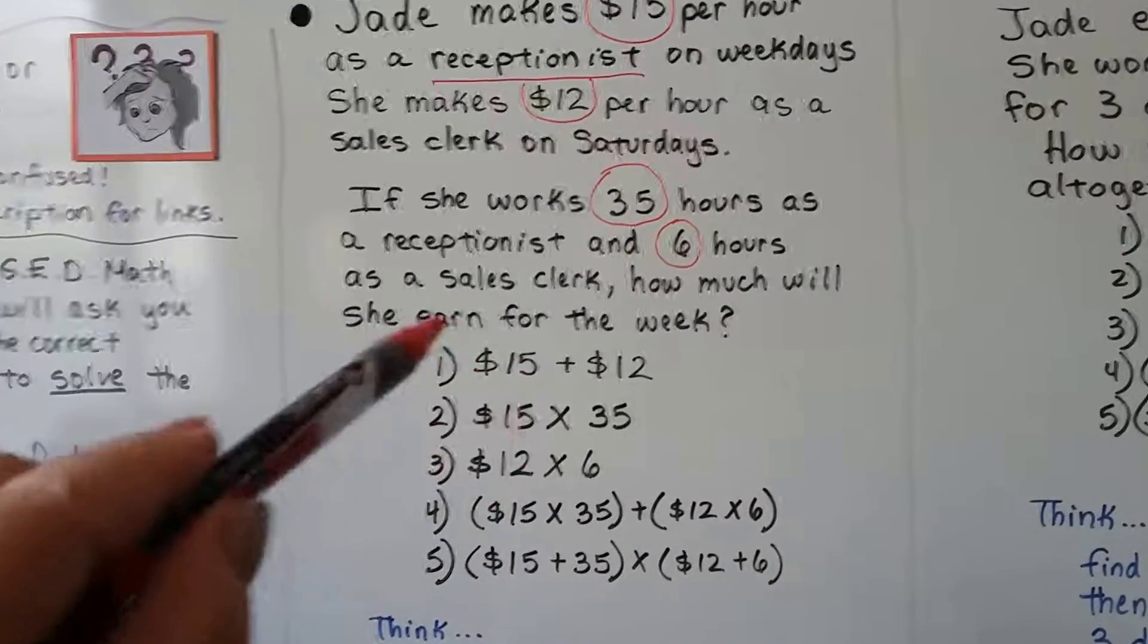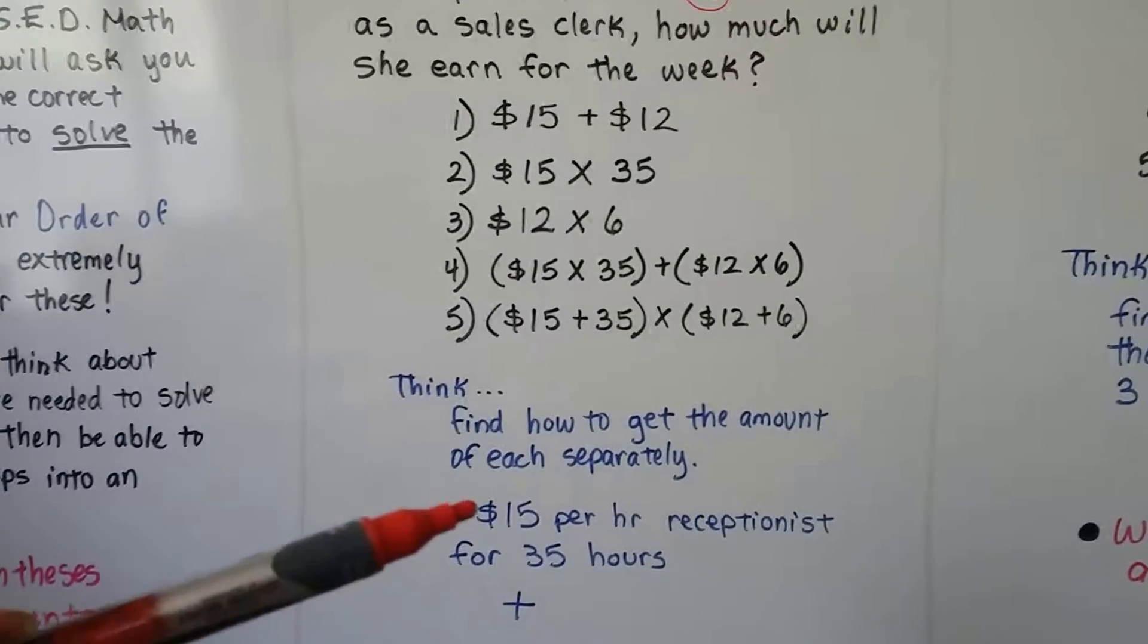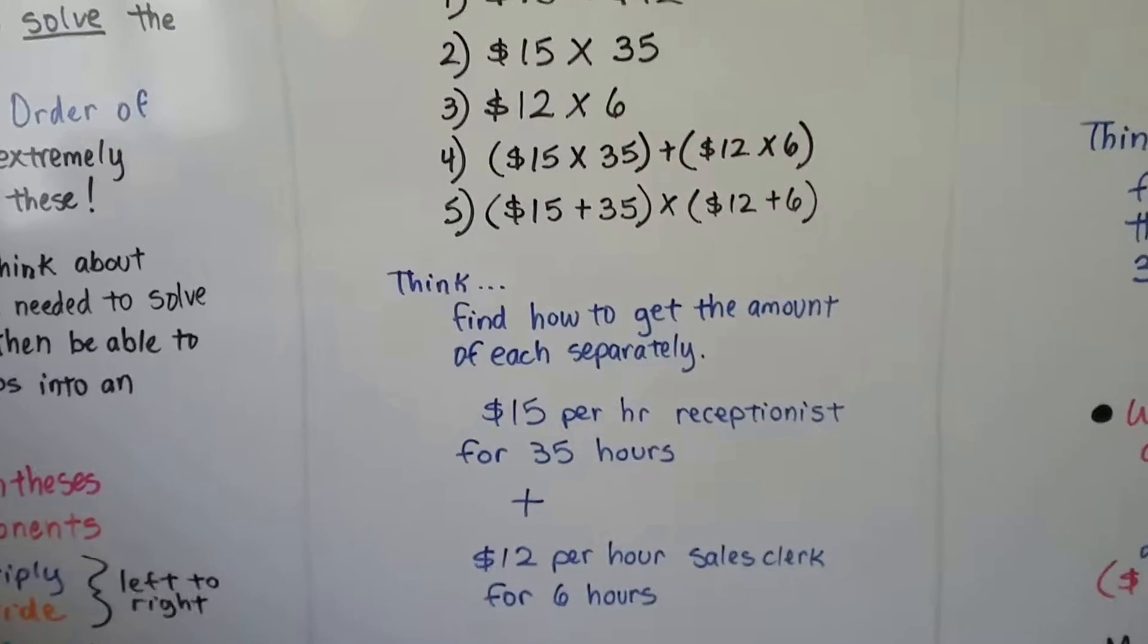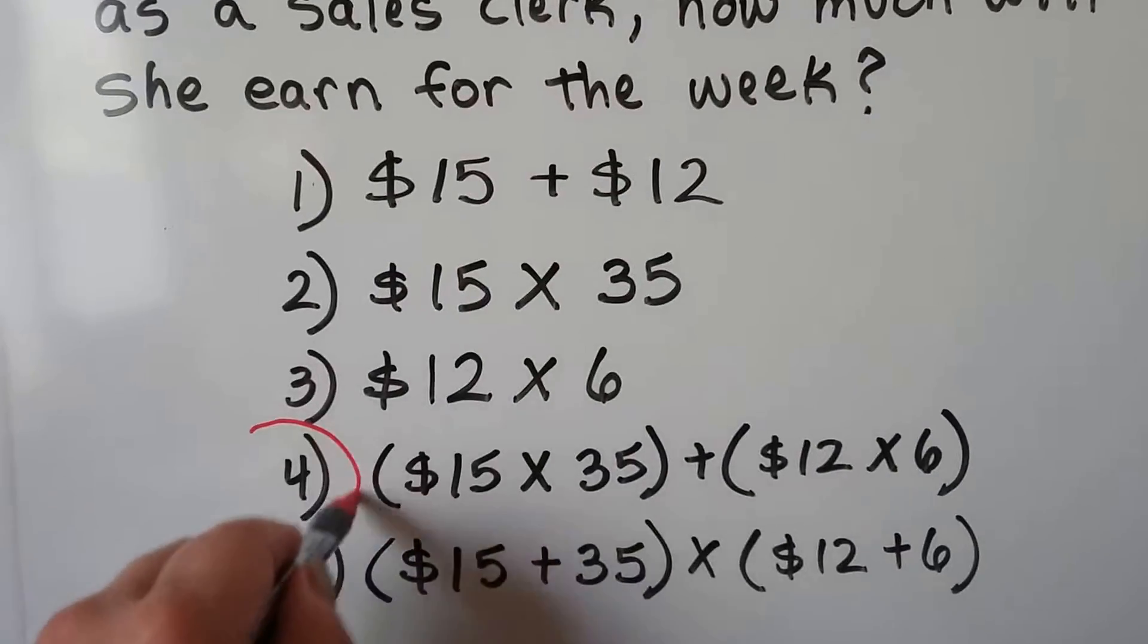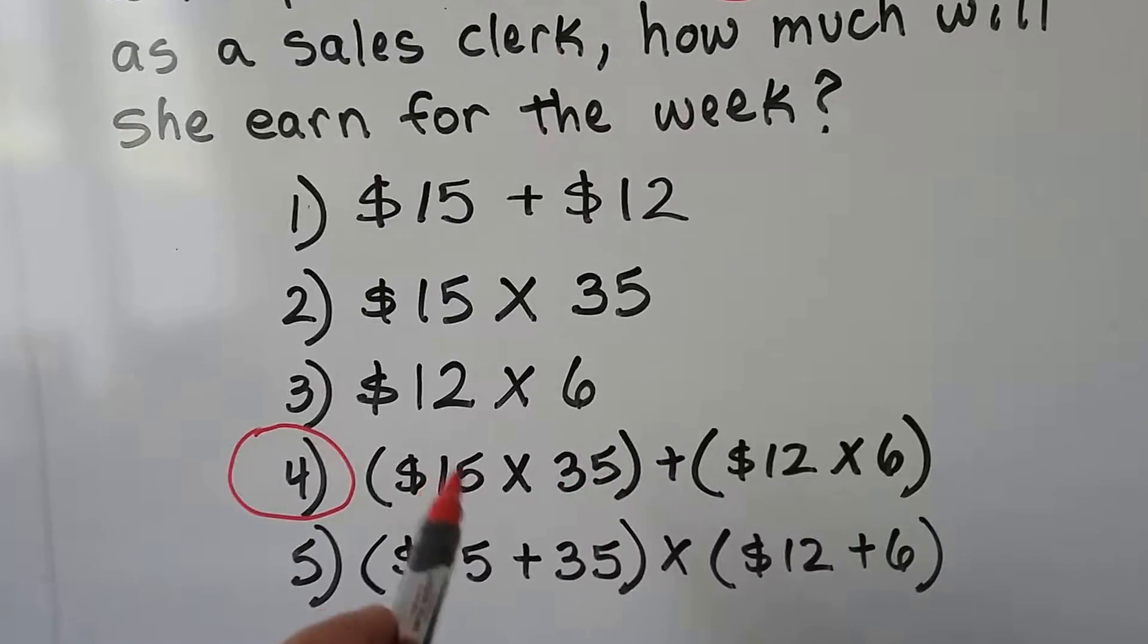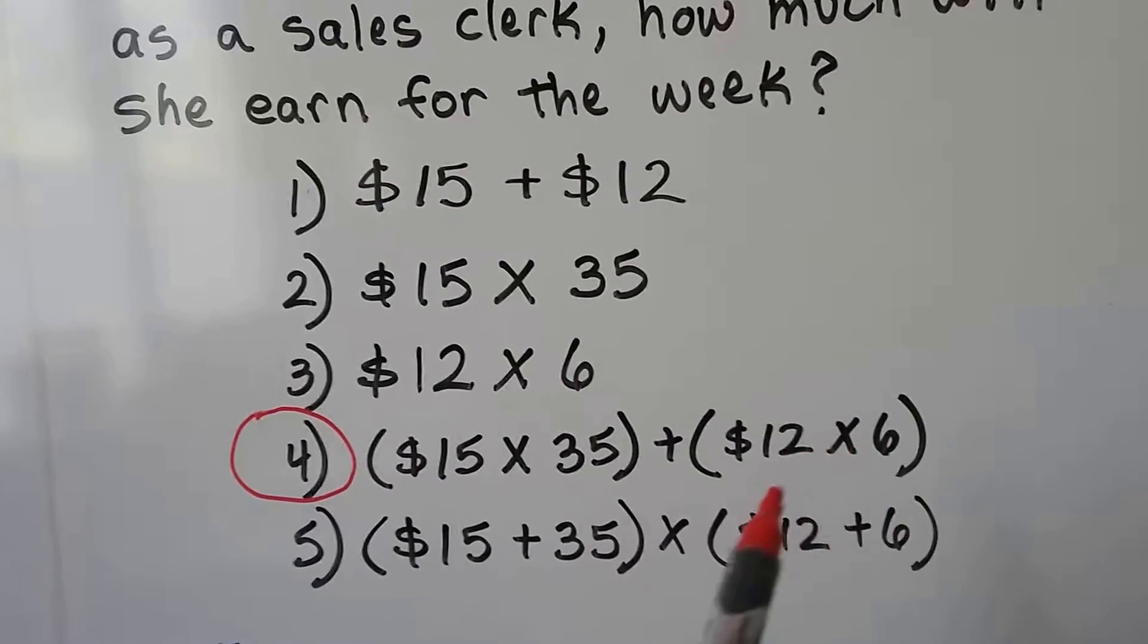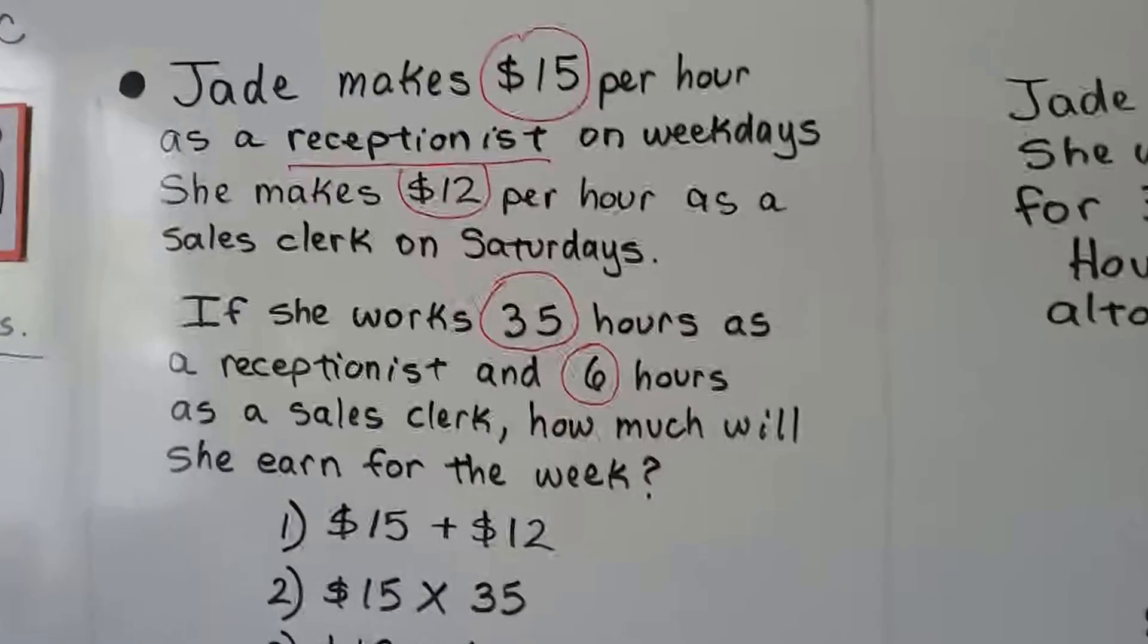We know it's not going to be one, two, or three. It's going to be one of these two bottom ones here. It's going to be four or five. $15 per hour as the receptionist for 35 hours added to the $12 per hour sales clerk for six hours. So actually, this is the correct answer. What we would do is multiply the 35 hours times the $15 per hour and get a product, set it aside, then do the $12 per hour times the six hours and get a product. And then we would add those two products together and that would solve this problem.